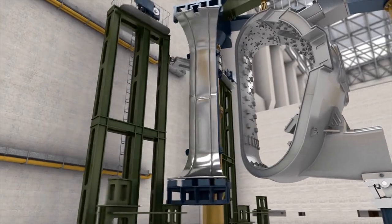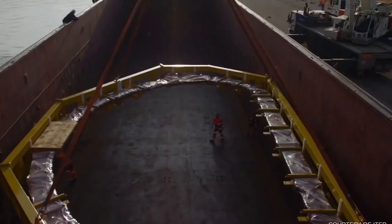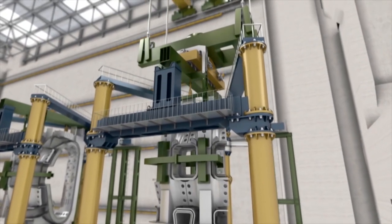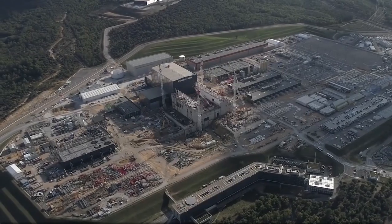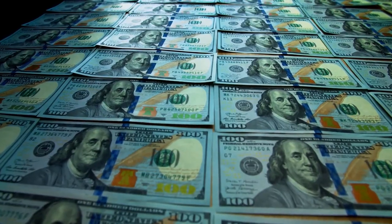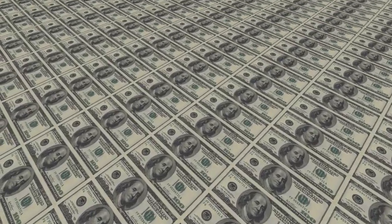The reactor's 18 D-shaped toroidal field magnets, each weighing 310 tons, requires 100 kilometers of niobium-tin superconducting strands. Such a large-scale project would require $25 billion, although others have cynically estimated it to be higher, at $65 billion.